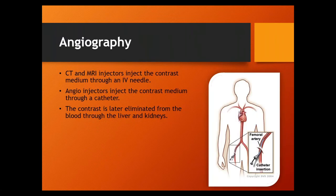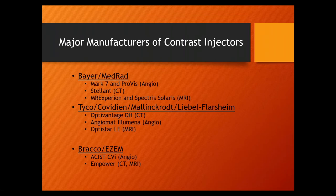In the United States, there are three primary manufacturers of contrast injectors. By far the biggest - probably 75 to 80% of all contrast injectors - are Bayer Medrad injectors. They make the most common CT injectors (the Stellant), the MRI injectors (the Spectra Solaris, the MR Experian), and the most common angio injectors (the Mark 7, the Provis, and the Mark 5+).